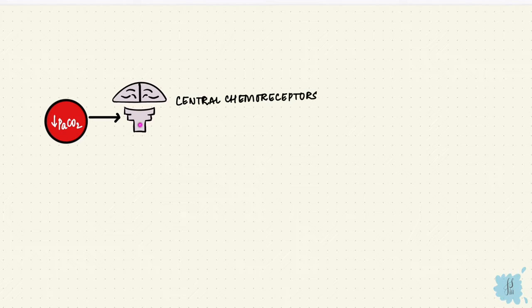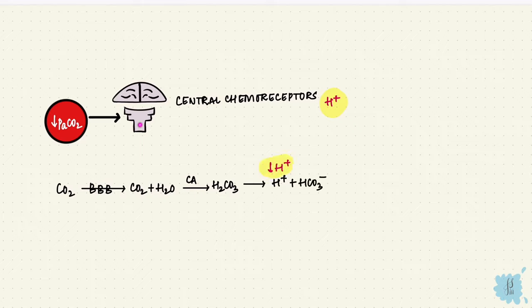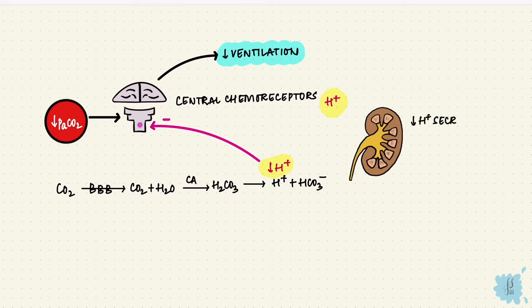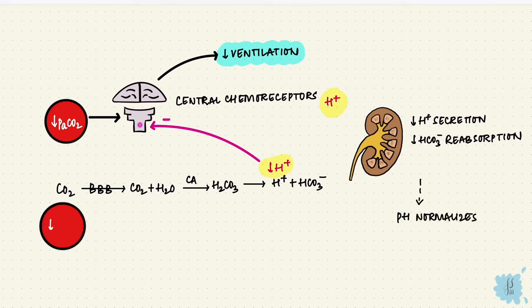The low carbon dioxide inhibits the central chemoreceptors. The central chemoreceptors respond to hydrogen ions. So the carbon dioxide crosses the blood-brain barrier, binds with water, and via carbonic anhydrase becomes carbonic acid, which dissociates into the hydrogen ion and the bicarb ion. The low hydrogen ions inhibit these chemoreceptors and reduce the excess ventilation. This happens first and then the kidney takes over, reduces hydrogen ion secretion and bicarb reabsorption and increases bicarb elimination. So the CSF pH normalizes. Now again the low oxygen from the peripheral chemoreceptors stimulates ventilation.